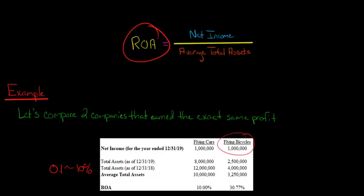For Flying Bicycles, we see that the ROA is 30.77%. And we got that by taking the 1 million net income, dividing it by the average total assets at 3.25 million. That's just our equation right here. And then we convert the proportion to a percentage. So 30.77%. Look at, this is triple what the other company's ROA is. If you think about it, each company has the same net income. So they have the same numerator up here for calculating the ROA.